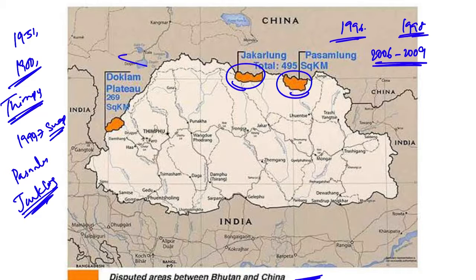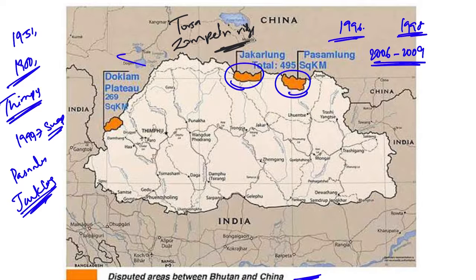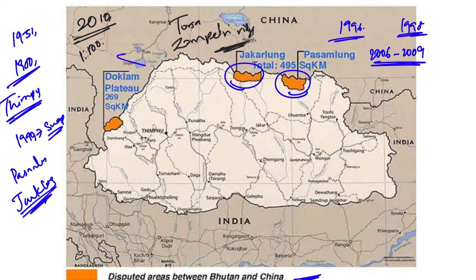Border talks broke down completely from 2006 to 2009. During this period, Beijing ramped up pressure by building at least six roads cutting deep into the western enclaves — among them one cutting through the Torsa Nature Reserve towards the Jompelri ridge, which is the closest point to the Bhutan-China-India tri-junction where the Royal Bhutan Army is stationed. Since 2010, a joint Bhutan-China technical commission has been engaged in verifying the border on the ground, developing shared 1:100,000 scale maps to facilitate technical discussions on their claim lines.